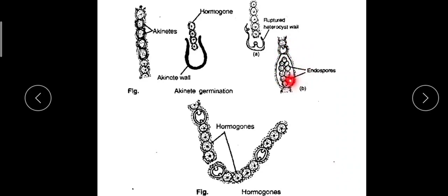Here, in this cell, it was a single cell. In this single cell, the protoplast breaks down into small bits. Each of the bits transforms to an endospore, and each endospore germinates to form a new filament.